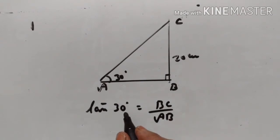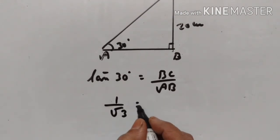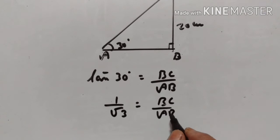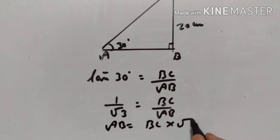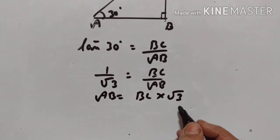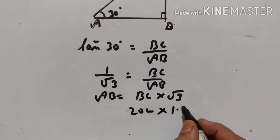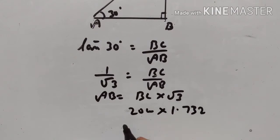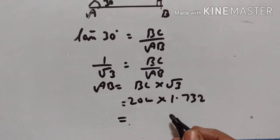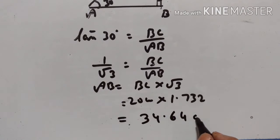We know tan 30° is equal to 1 upon square root of 3. So 1 upon √3 equals BC upon AB. We want AB, so AB equals BC into √3. BC is equal to 20 cm and √3 is equal to 1.732. Therefore AB equals 20 into 1.732, which is equal to 34.64 centimetres.